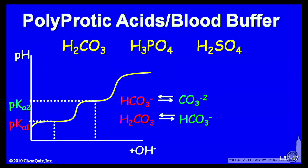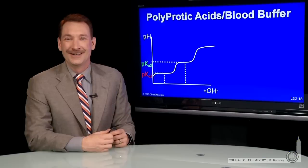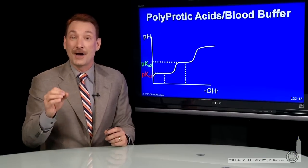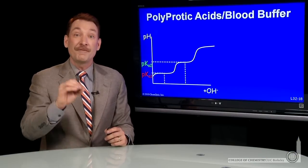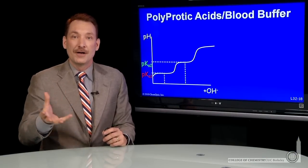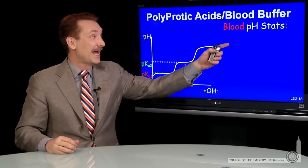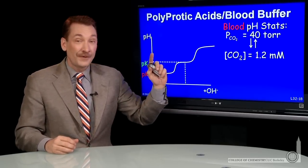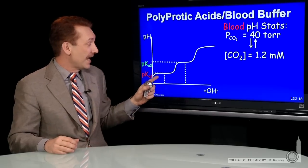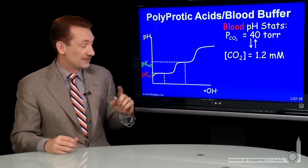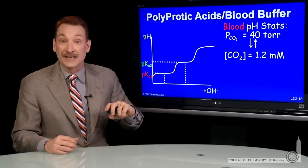And polyprotic acids can act as buffers in several regions. They have two distinct pKa's, or if it's triprotic, three distinct pKa's. Let's look at a polyprotic acid, carbonic acid, buffering your blood. Now, your blood is buffered with carbonic acid, but only the first pKa, that is the buffer around the first pKa, is used. And that first pKa is around 6.